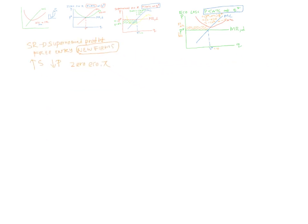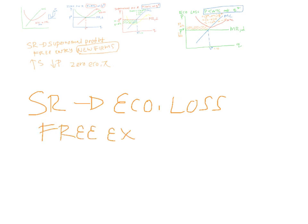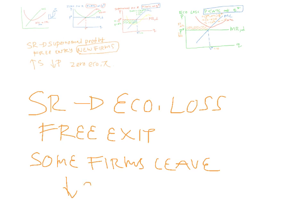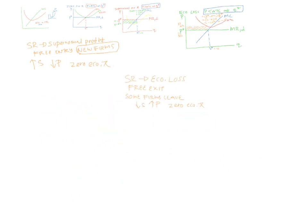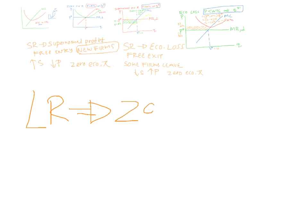It's the same story in the short run if you are making economic losses. We also assume free exit — it costs you nothing to leave the industry. All firms are identical, so if you are making a loss, all other firms are making a loss too. Some firms leave, supply will fall, price will rise, until you end at zero economic profit. So in the long run, all you can have in perfect competition is zero economic profit.